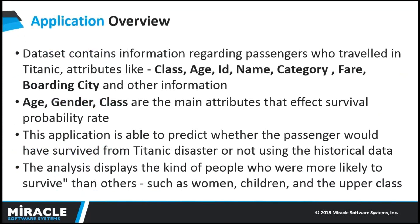Let's have an overview on the application. The data used for the demo contains information regarding the passenger's age, gender, the class they travelled in, and which city they boarded the ship. Every dataset contains many attributes, but some are more important. In our case, age, gender, and passenger class will be taken into consideration.